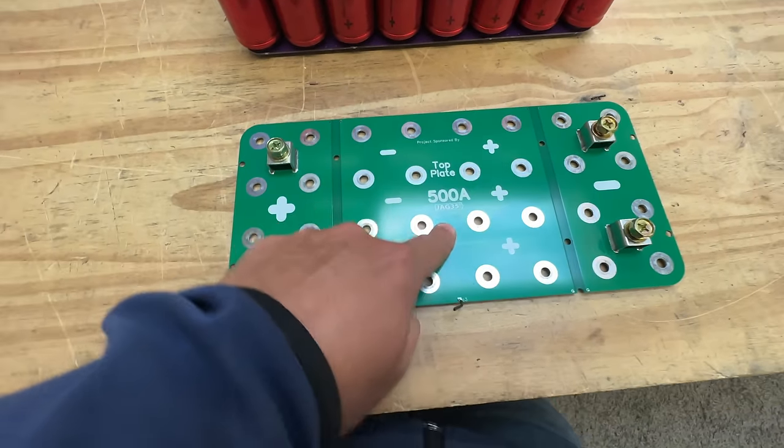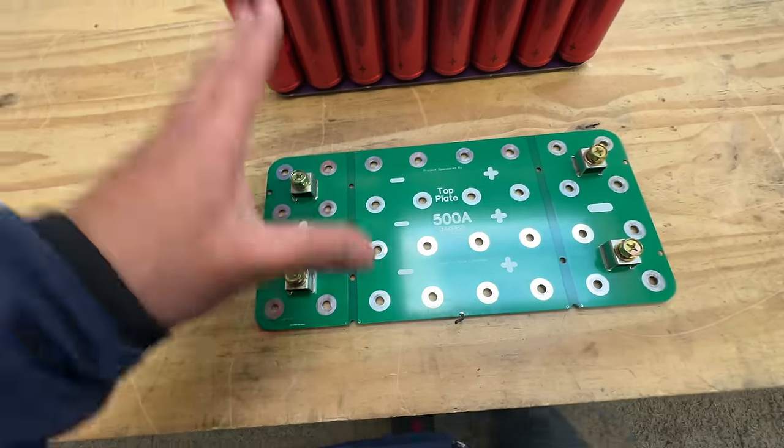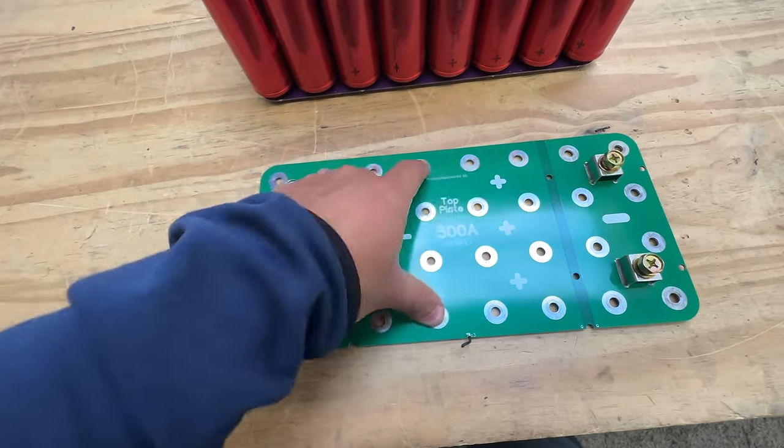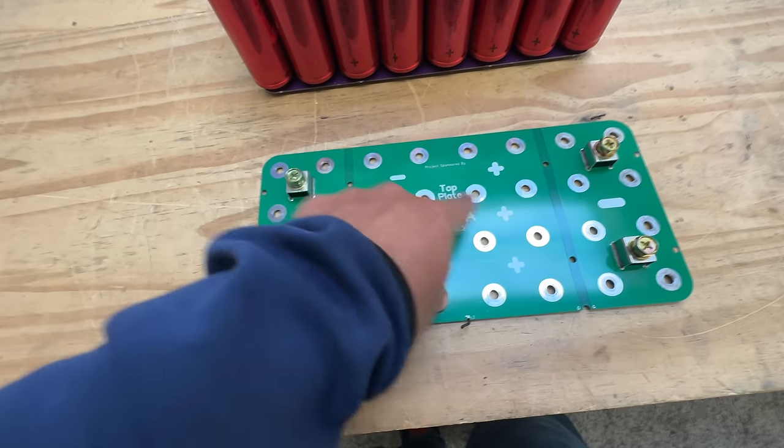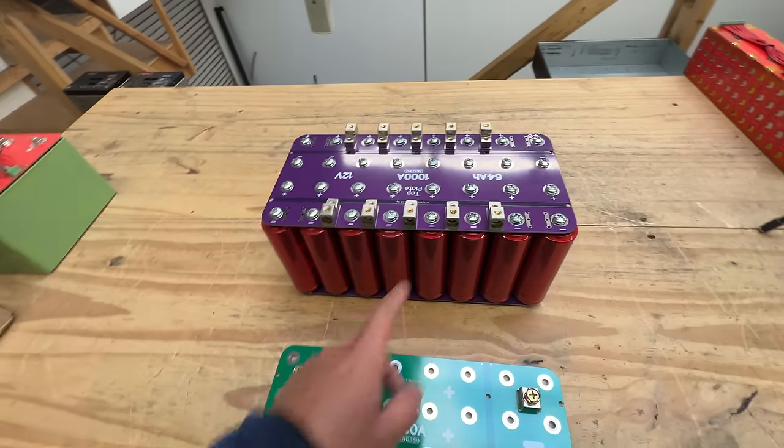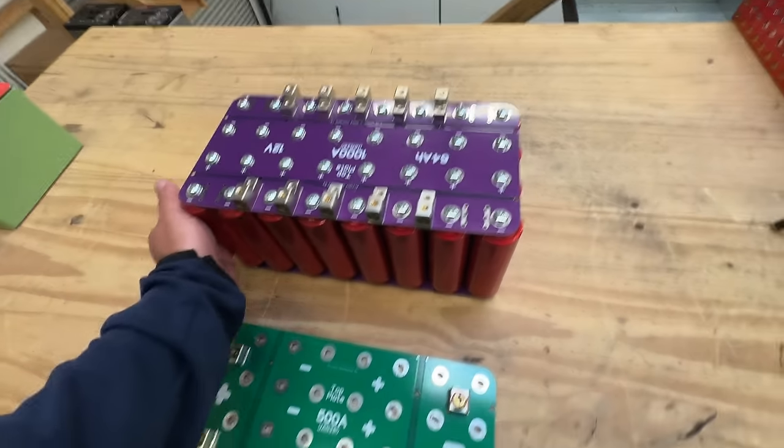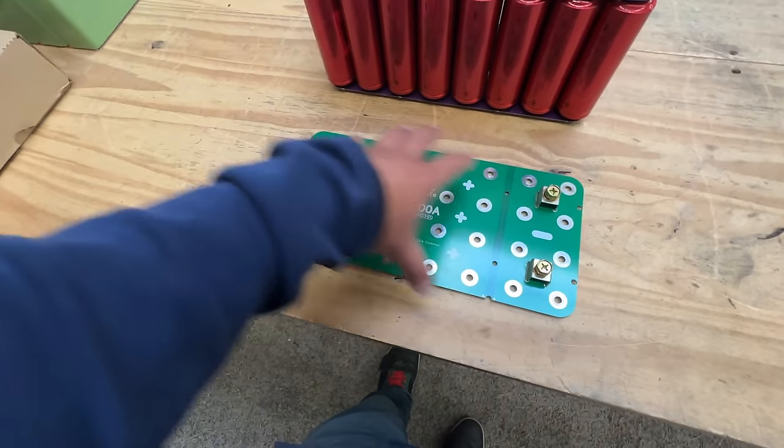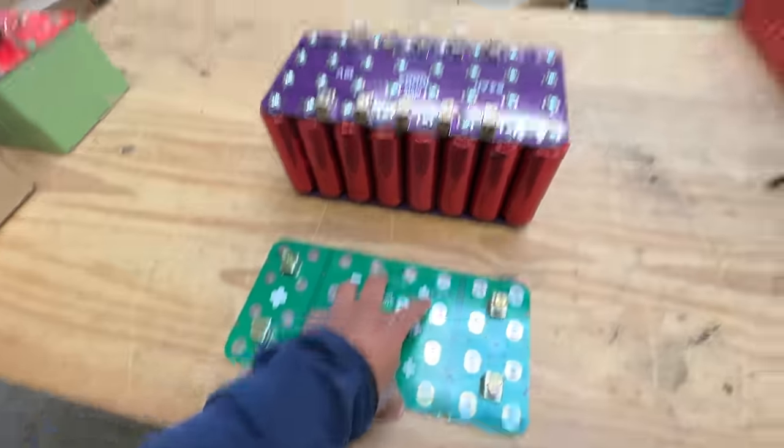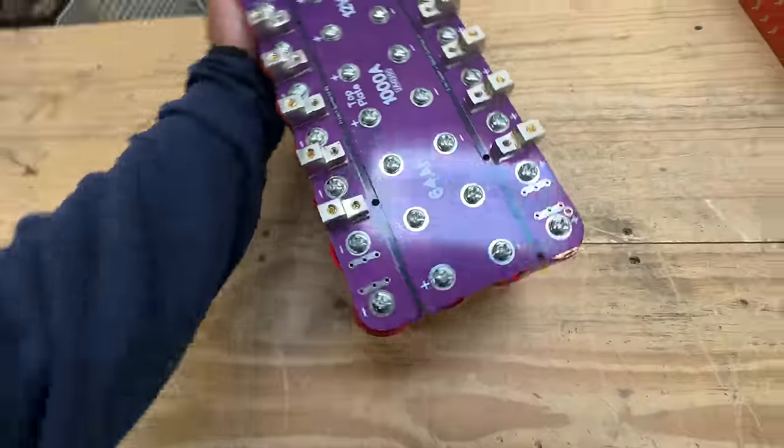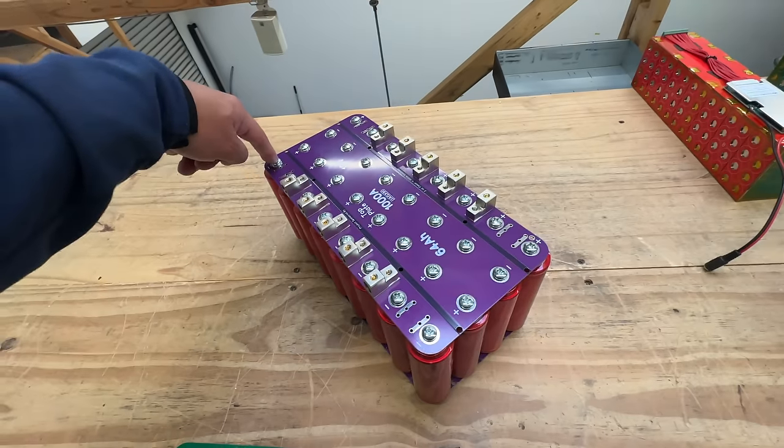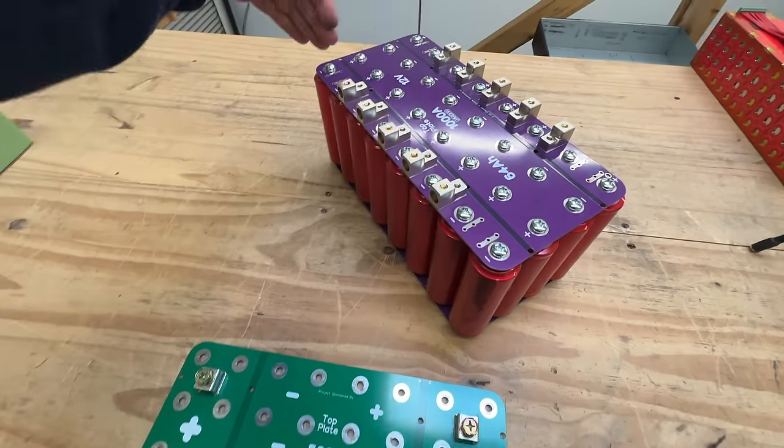When you look at the thermal camera you will see that this section right here gets hot, and it's because of these eight. Because you're trying to make the stiffest pack possible, then you need to be able to most efficiently transfer those electrons from cell to cell. This design here is going to do that.